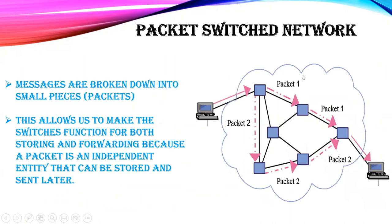Next is packet switched network. Here, messages are divided into small packets. These packets are independent — they can either store the data or transmit it. If traffic in an area is heavy, the packet will store the data until the traffic is cleared, and then the message — broken down into packets — is sent to the destination.